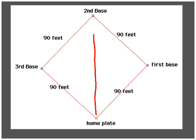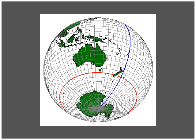How far does a catcher have to throw a ball to throw out a runner trying to steal second base? How far do you go if you go north 1,000 miles and east 2,000 miles?